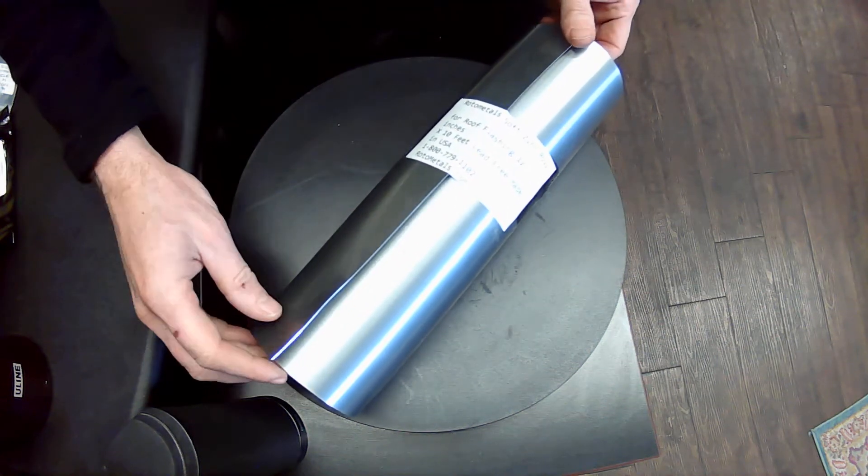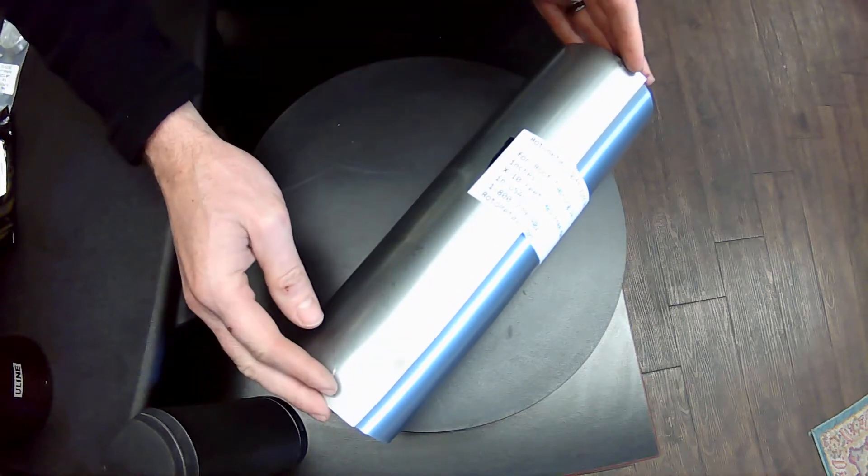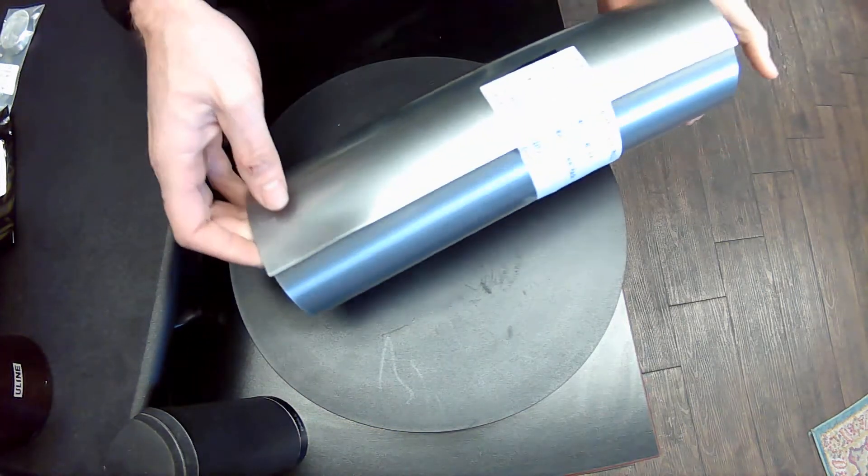All right, this is our RotaMetals Soft Zinc Roof Lashing. It comes 12 inches wide and 10 feet long, rolled up in a spool.